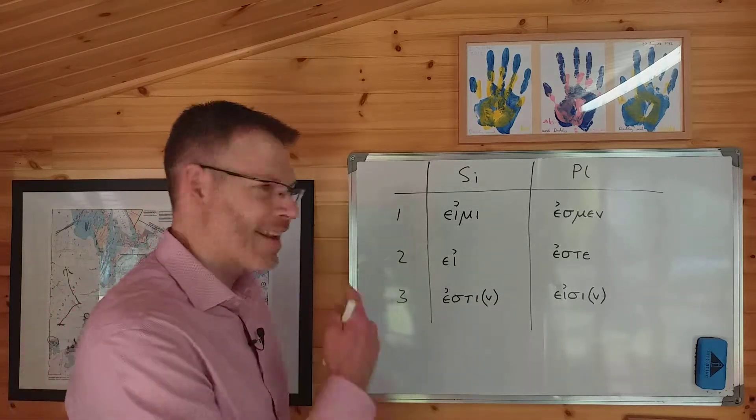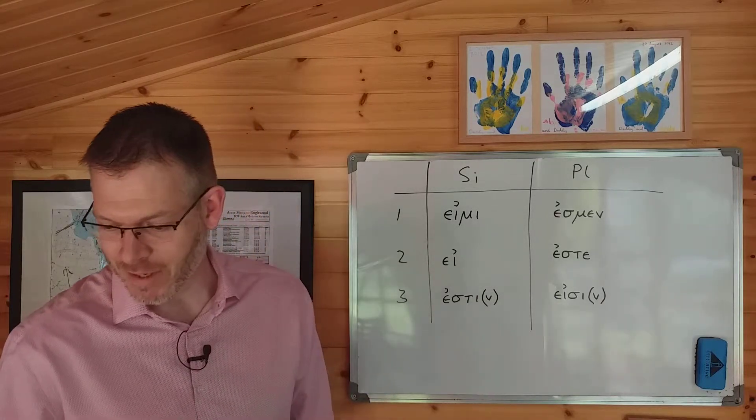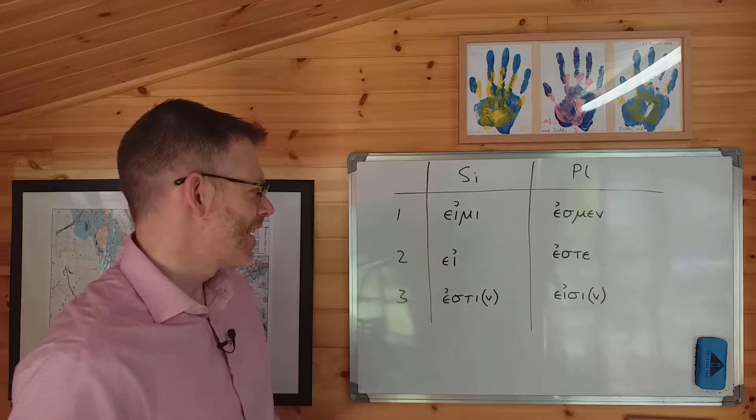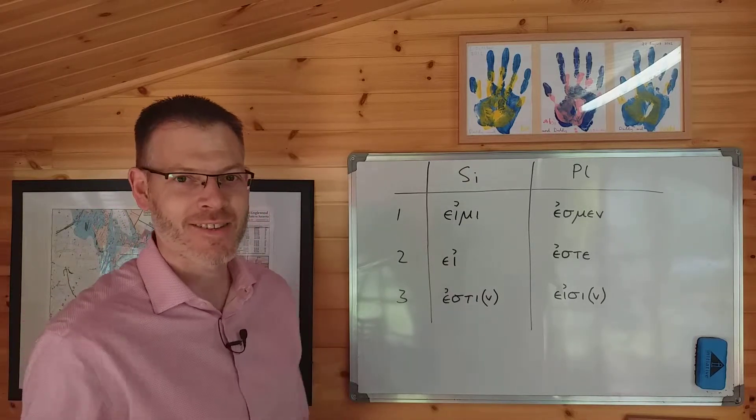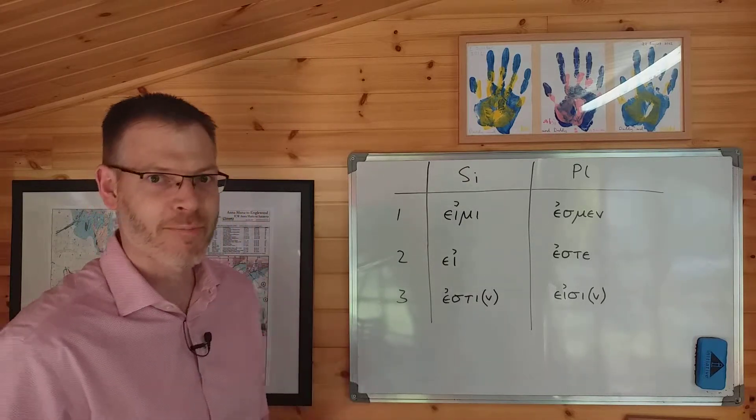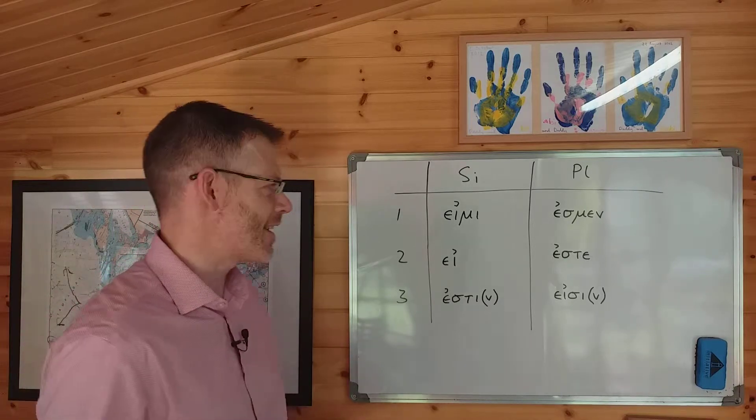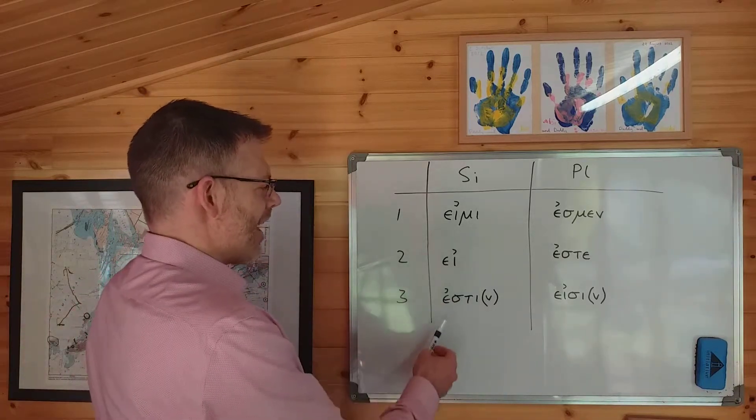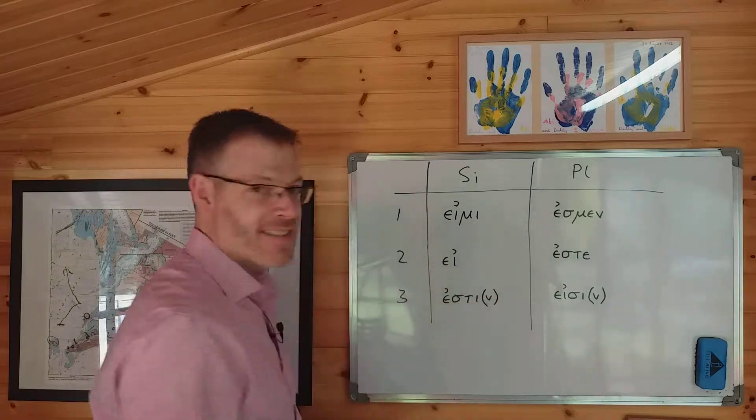The verb is εἰμί, and here is the table, right there in the middle of page 57, complete with the mistake. So see if you can spot it. If you've read down to the bottom of page 57, you will have spotted it already. εἰμί, εἶ, ἐστίν, ἐσμέν, ἐστέ, εἰσίν.